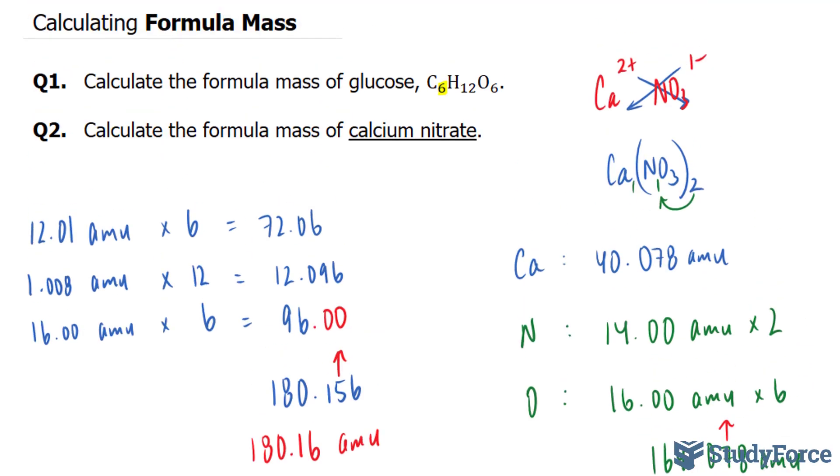That represents the formula mass of calcium nitrate. And there you have it. That is how to calculate the formula mass of any compound.